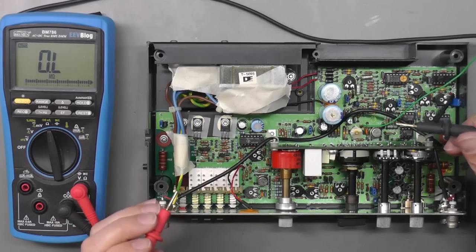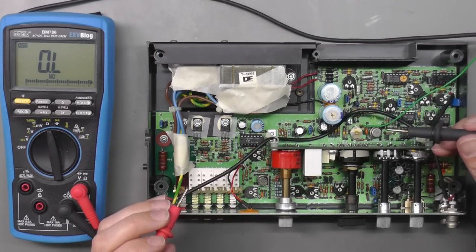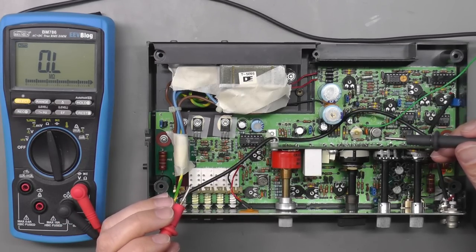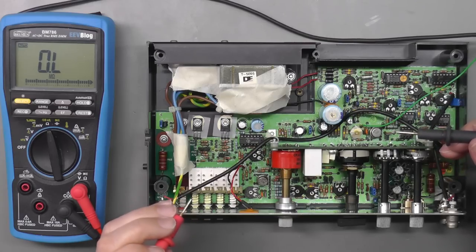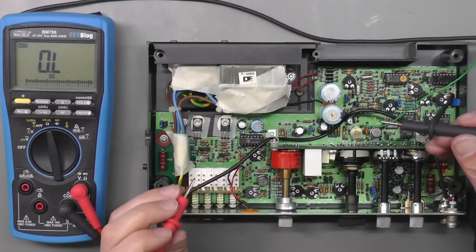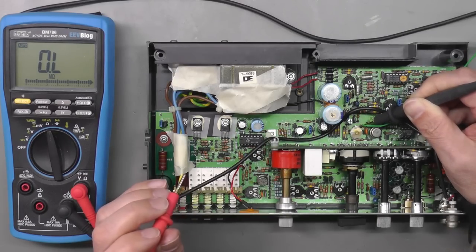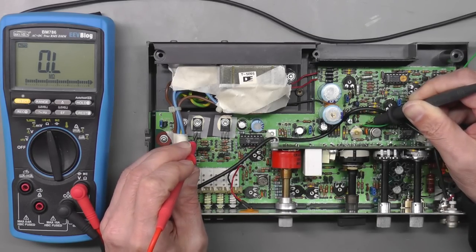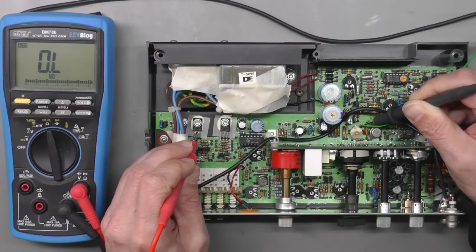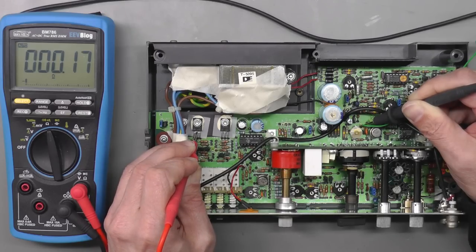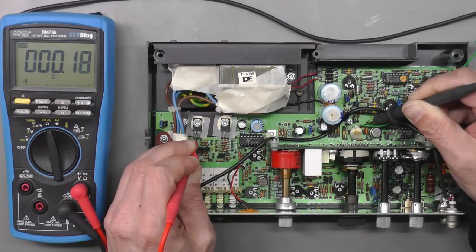Before I do anything, I'm going to measure the plus 14 and minus 14 supplies and see for a short circuit, especially that plus 14 volt rail. I'll pick up a ground here and on the middle pin, the collector of that transistor—0.2 of an ohm. No wonder the plus 14 volt rail is at zero volts, it's shorted to ground.